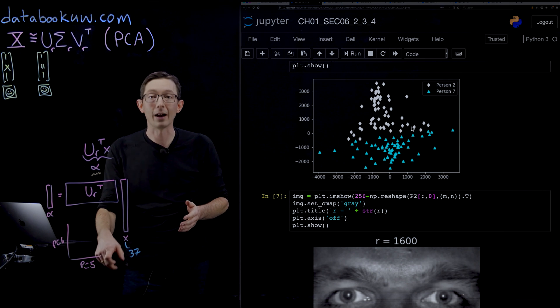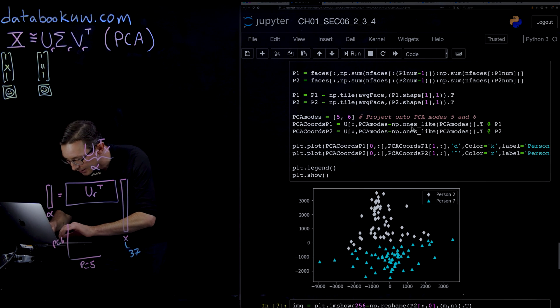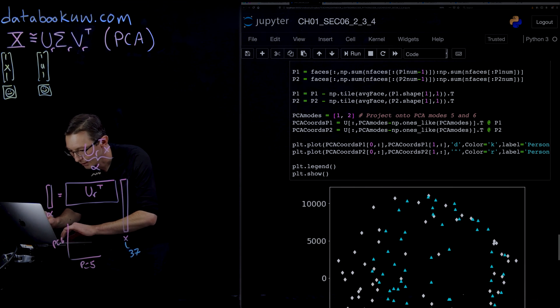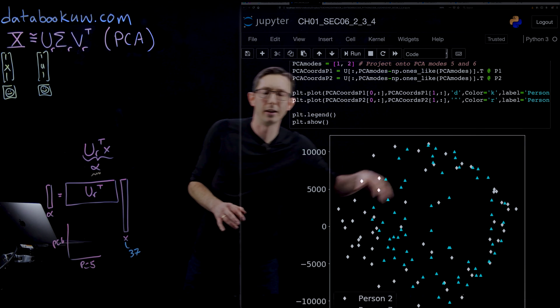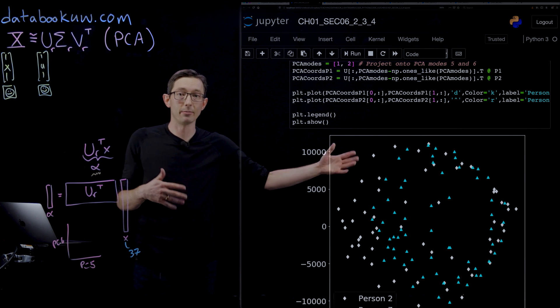If I plotted this for the first, instead of PCA modes five and six, let's say I do one and two—look how terrible the separation is here. There's almost no separation of the two people in these two principal components one and two.